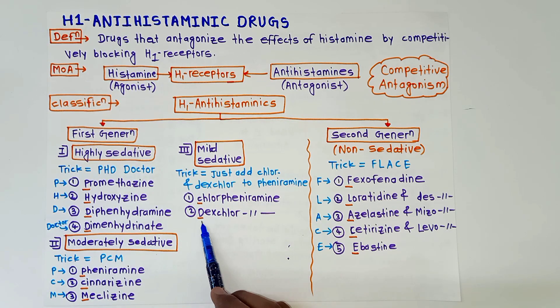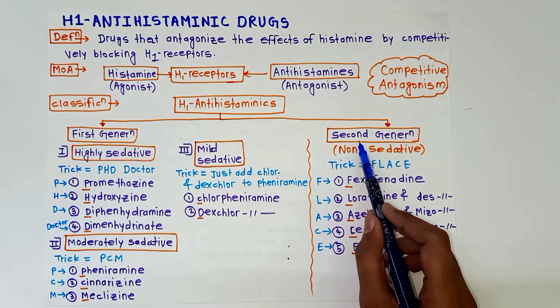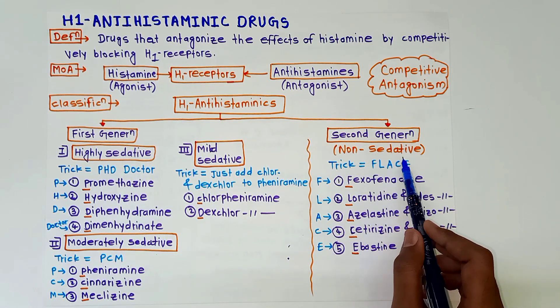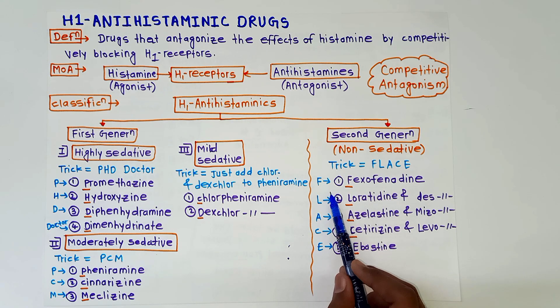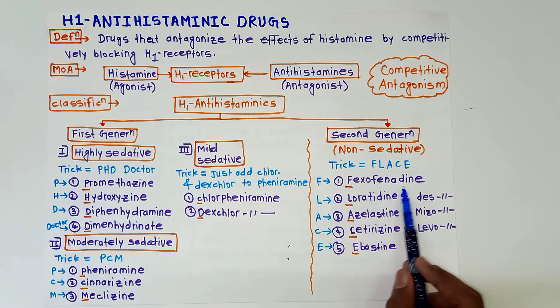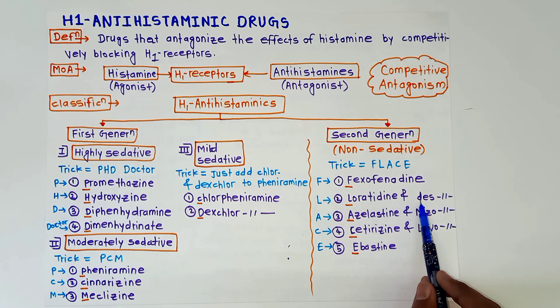Next is second generation or non-sedative antihistaminic drugs. Trick to remember these drugs is FLACE: F for fexofenadine, L for loratadine and desloratadine, A for azelastine and mizolastine, C for cetirizine and levocetirizine, and E for epastine.